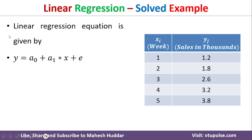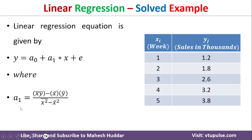Here, a0 is the intercept and a1 is the coefficient of the independent variable x. To calculate a1, we use the formula: a1 equals the mean of x*y minus the product of mean of x and mean of y, divided by the mean of x² minus the square of the mean of x.